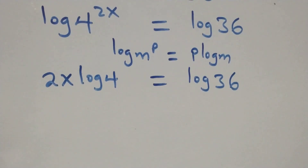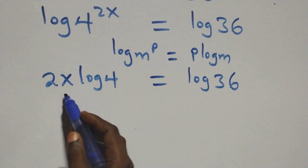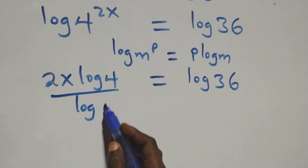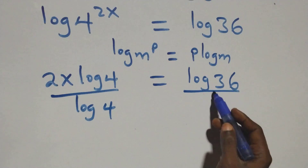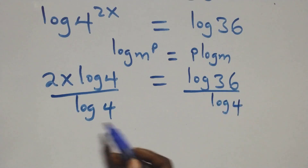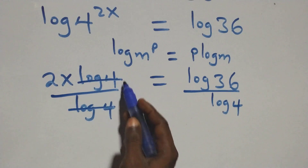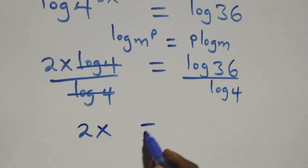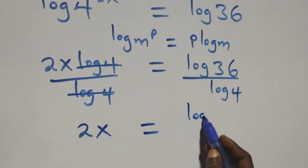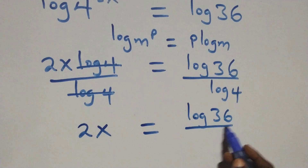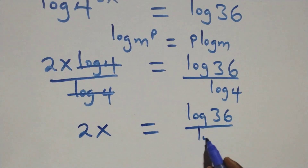The next step, we divide both sides by log 4. We divide this side by log 4, and also divide this side by log 4. Log 4 cancels each other, and then we have 2x equals to log 36 over log 4.